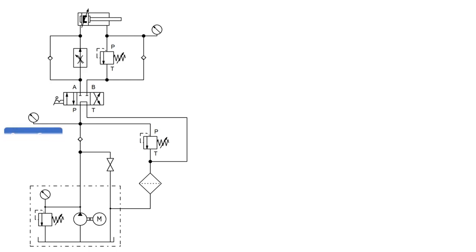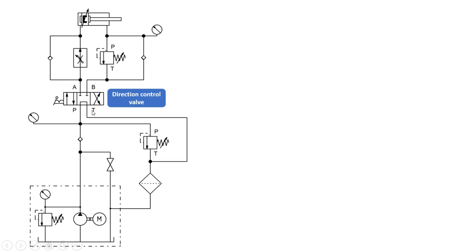Then there is a pressure gauge to indicate the pressure in the system, and a direction control valve — four-way, three-position type. This is the left envelope mode, this is the central position, and this is the right envelope mode. There are four ports: P (pump or pressure port), A (cylinder port), B (also a cylinder port), and T (tank or receiver).